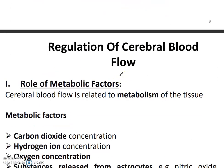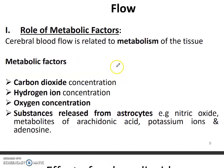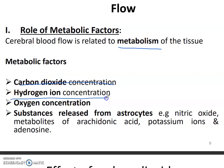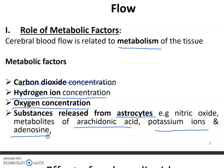There is also the regulation of cerebral blood flow through metabolic factors. Cerebral blood flow is related to the metabolism of the tissue. The metabolic factors include carbon dioxide concentration, hydrogen ion concentration, and oxygen concentration. Substances released during neural activity are nitric oxide, metabolites of arachidonic acid, potassium ions, and adenosine.